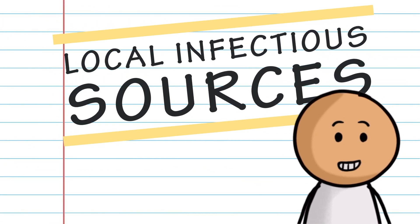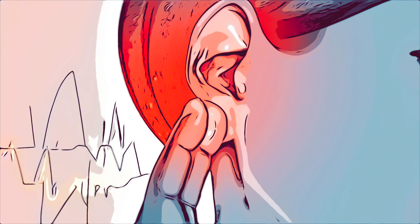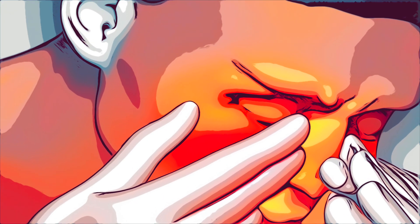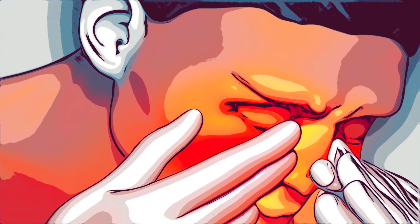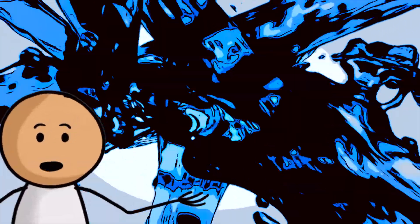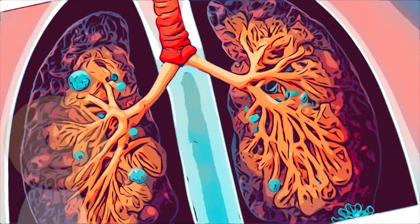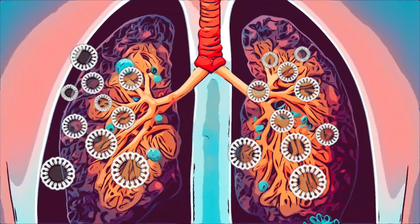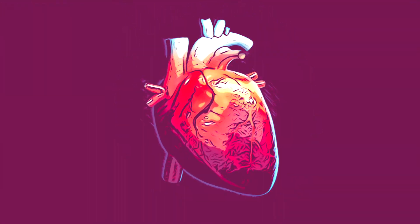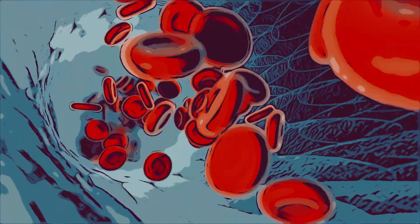These often originate from local infectious sources such as ear infections, dental abscesses, or infections of the paranasal sinuses that spread directly to the brain. Infections in other parts of the body can also cause a brain abscess to form — for example, an infection causing pneumonia in the lung or an infection causing endocarditis in the heart may spread to the brain via the bloodstream.